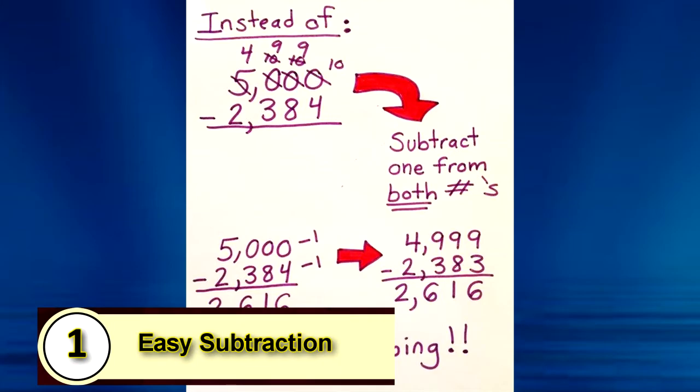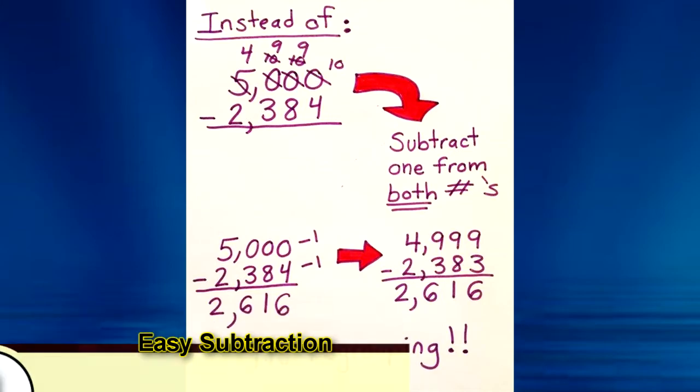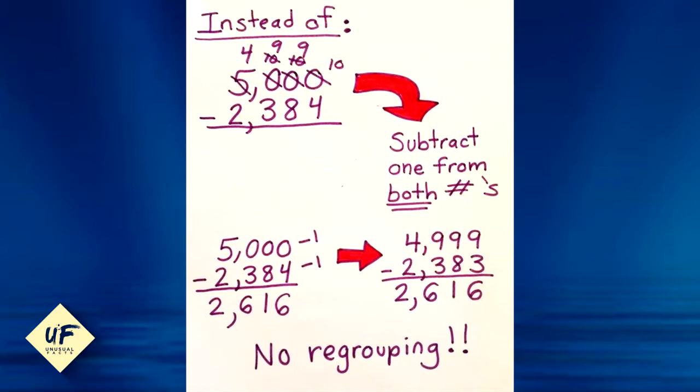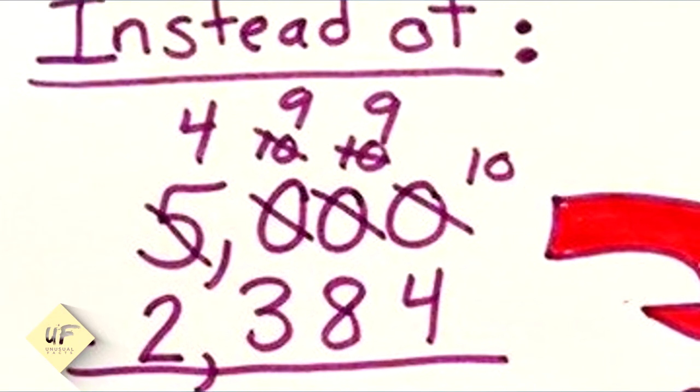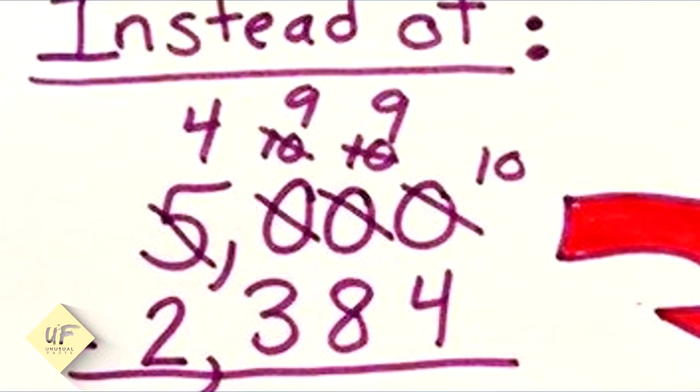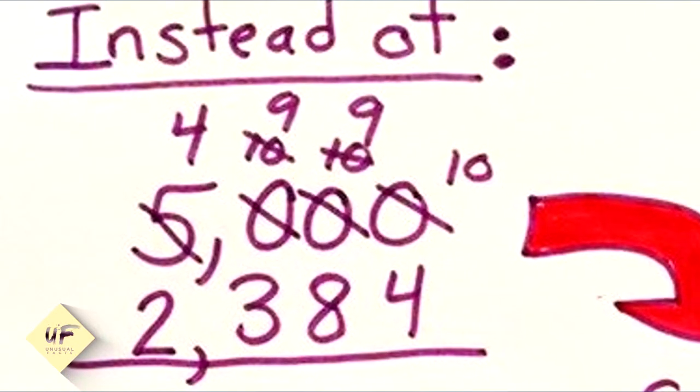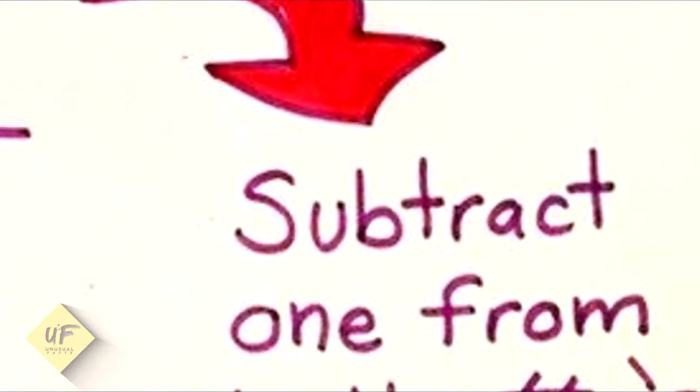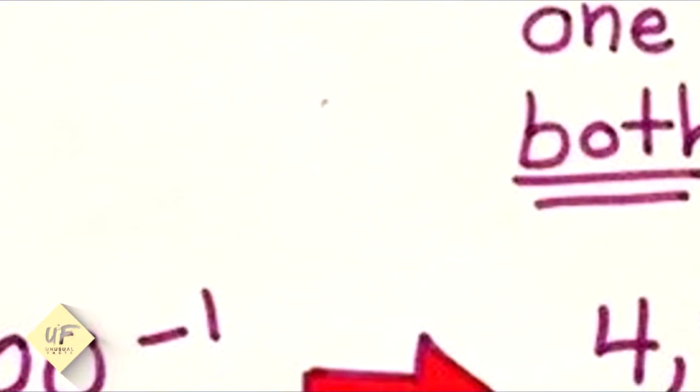An easy way to do subtraction with no regrouping. Instead of doing 5,000 minus 2,384 with all the tens and nines and fours, breaking it down, you can subtract one from both numbers.